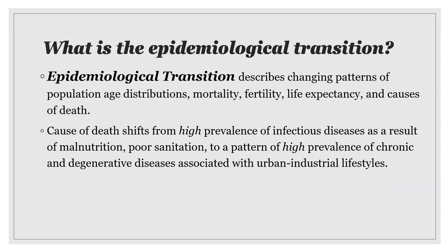The epidemiological transition describes changing patterns of population age distribution, mortality, fertility, life expectancy, and causes of death. Causes of death shift from high prevalence of infectious diseases as a result of malnutrition and poor sanitation, to a pattern of high prevalence of chronic and degenerative diseases associated with urban industrial lifestyles — and we're certainly experiencing that in the United States.